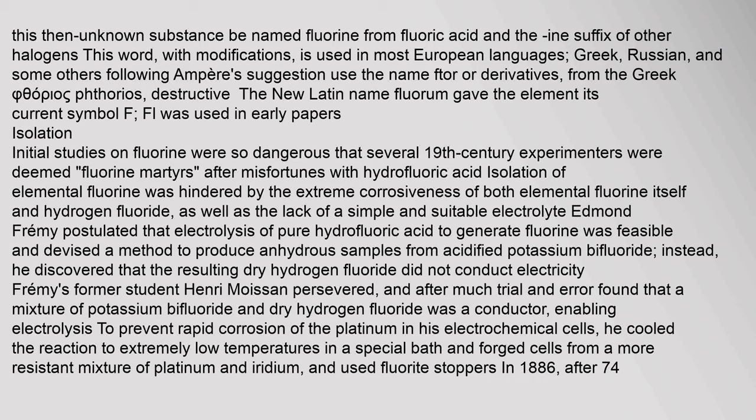Initial studies on fluorine were so dangerous that several 19th-century experimenters were deemed 'fluorine martyrs' after misfortunes with hydrofluoric acid. Isolation of elemental fluorine was hindered by the extreme corrosiveness of both elemental fluorine and hydrogen fluoride, as well as the lack of a suitable electrolyte. Edmund Frémy postulated that electrolysis of pure hydrofluoric acid could generate fluorine and devised a method to produce anhydrous samples from acidified potassium bifluoride. Instead, he discovered that the resulting dry hydrogen fluoride did not conduct electricity. Frémy's former student Henri Moissan persevered, and after much trial and error found that a mixture of potassium bifluoride and dry hydrogen fluoride was a conductor, enabling electrolysis. To prevent rapid corrosion of the platinum in his electrochemical cells, he cooled the reaction to extremely low temperatures and forged cells from a more resistant mixture of platinum and iridium, and used fluoride stoppers.